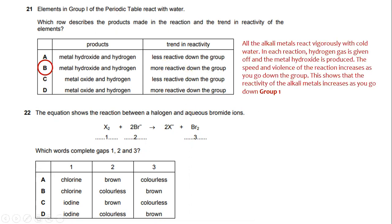All the alkali metals react vigorously with cold water. In each reaction, hydrogen gas is given off and the metal hydroxide is produced. The speed and violence of the reactions increases as you go down the group. This shows that the reactivity of the alkali metals increases as you go down group 1.